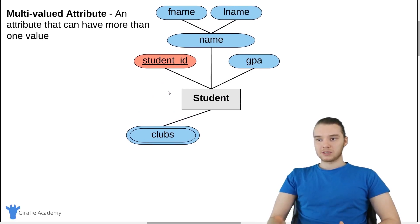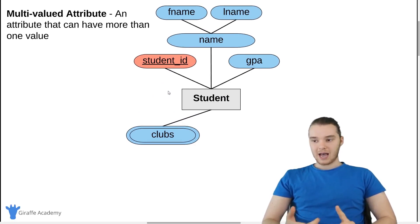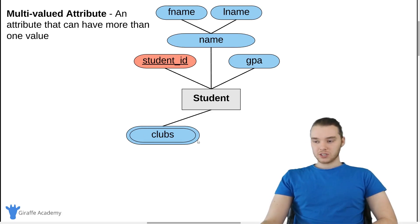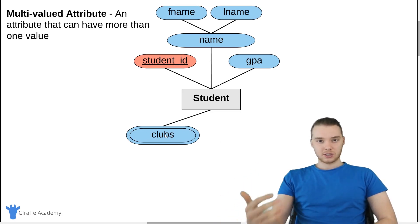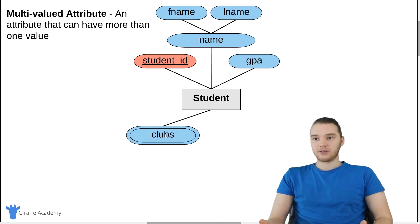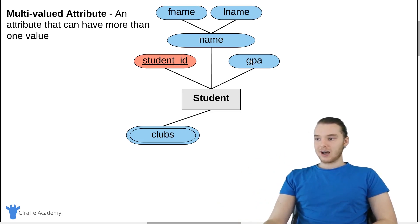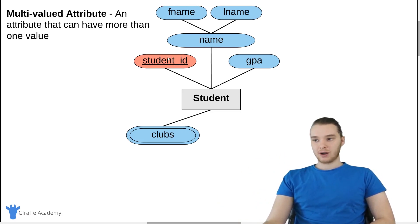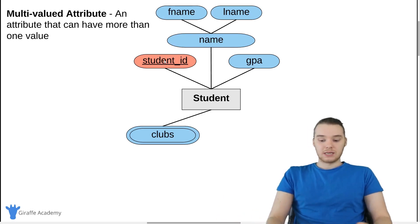We can also define a multi-valued attribute. If there are any attributes in your data model that could have more than one value, you can put them in a multi-valued attribute, which looks just like an attribute except we have an extra circle — so it's two circles with the name of the attribute inside. Clubs, for example — a student might be involved in a bunch of different clubs, and so clubs would be a multi-valued attribute. A student's not going to have more than one GPA or more than one student ID, but they might have more than one club that they belong to.